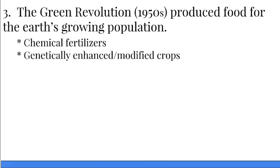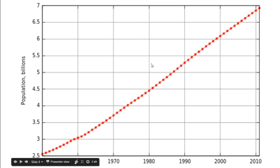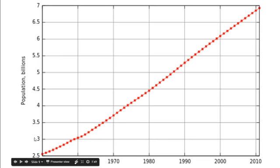The Green Revolution is an explosion in food production. More and more land on Earth is being used to produce more food than ever before in world history — more land is being used for cultivation. As we've known throughout all of world history, the more food production there is, the more population growth there will be. Humanity's population has skyrocketed in the last 60 to 80 years, partly due to the use of chemical fertilizers and genetically modified or enhanced crops.